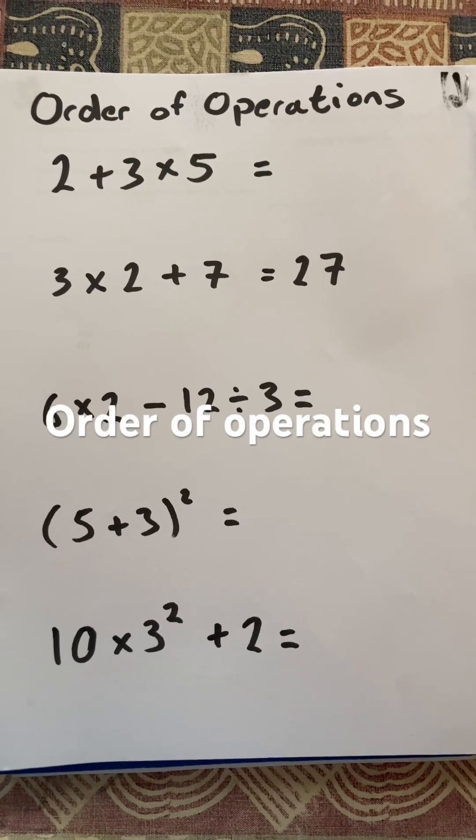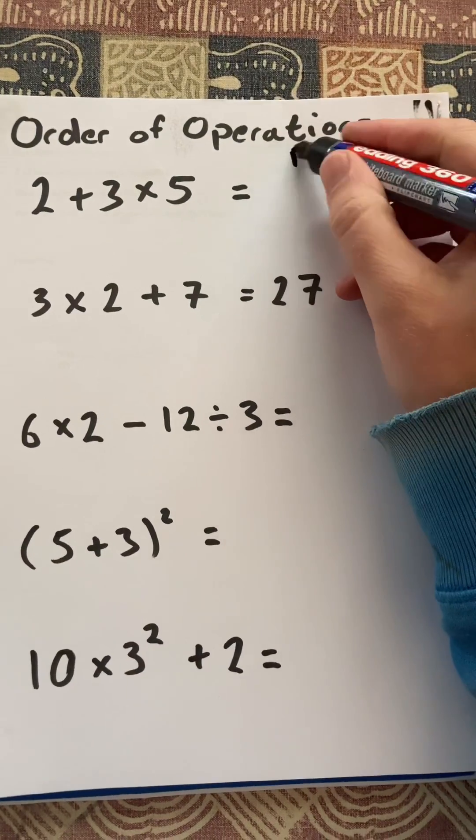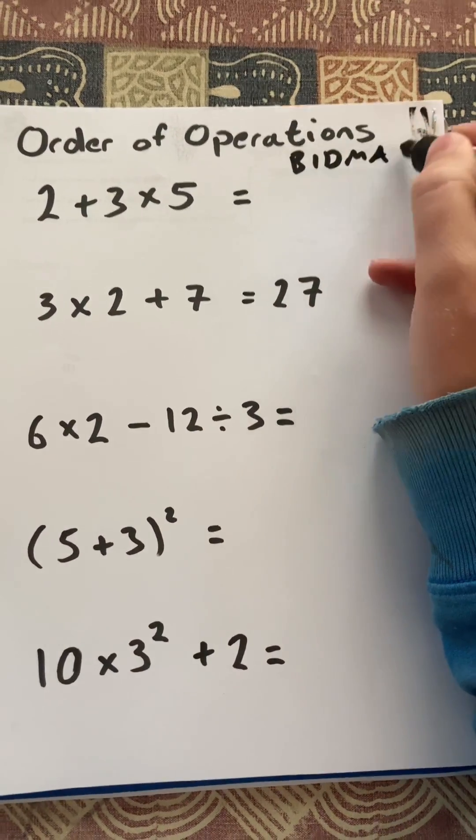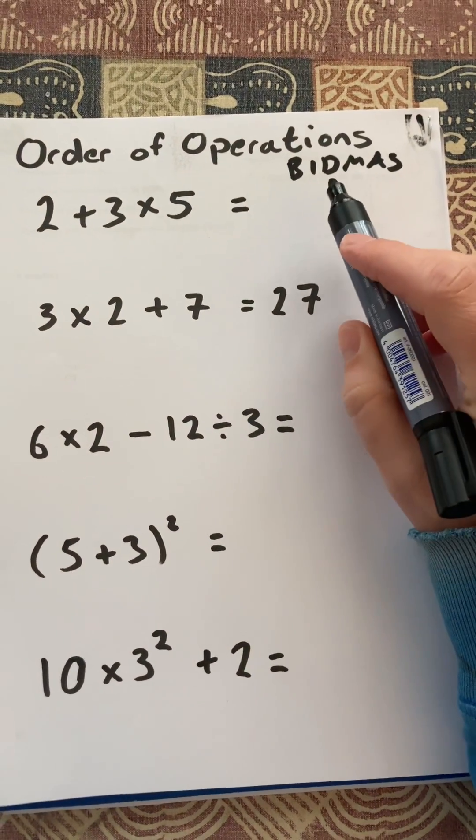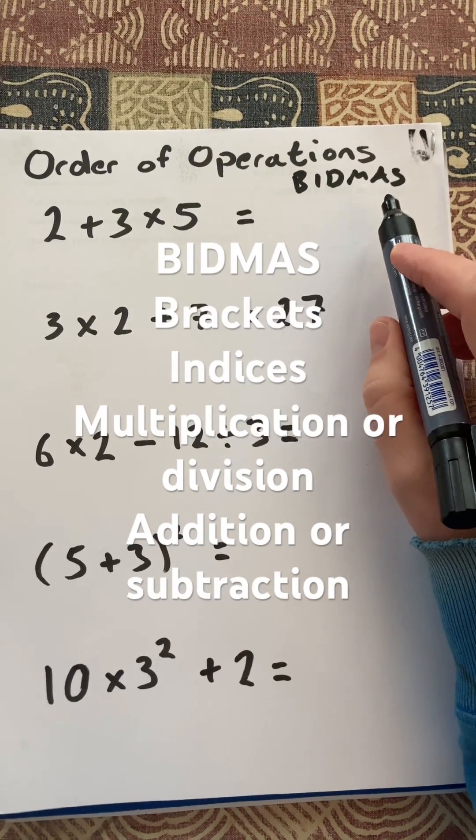Hello and welcome to Martin Maths doing a short on order of operations, otherwise known as BIDMAS, where you must do the brackets, then indices, before you do division or multiplication, before you do addition or subtraction.